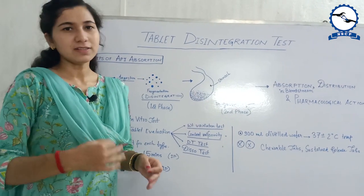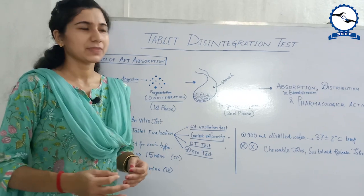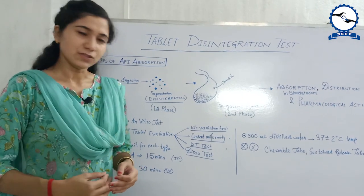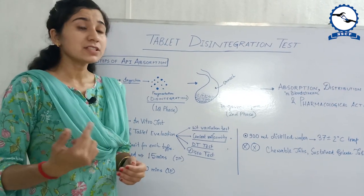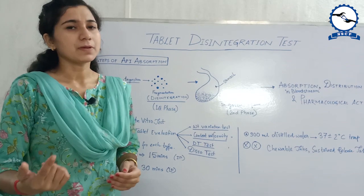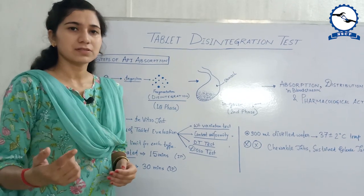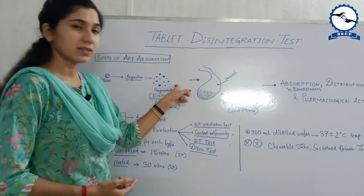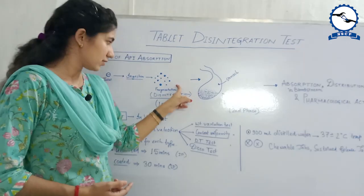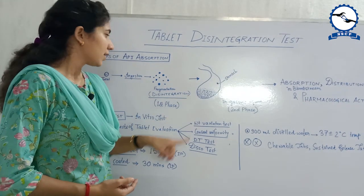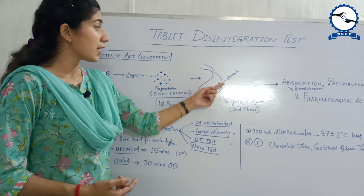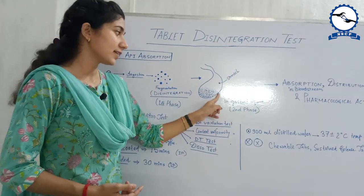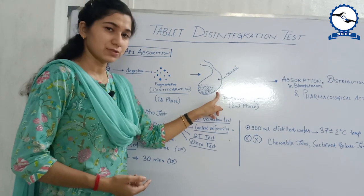Suppose you have taken a tablet and it is ingested in your stomach. The first phase that happens is disintegration — the tablet is divided into fragments. Then the tablet is dissolved in the gastric liquid in your stomach, which is called dissolution.